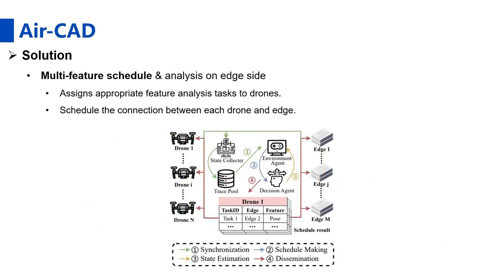To achieve fast crowd anomaly detection, edge devices connected to drones are deployed to offload assigned feature analysis tasks from drones. ALCAD assigns appropriate feature analysis tasks to drones shooting at variable angles, and schedules the connection between each drone and edge to accelerate processing based on drones' assigned tasks and the computing and networking resources of the edge device.